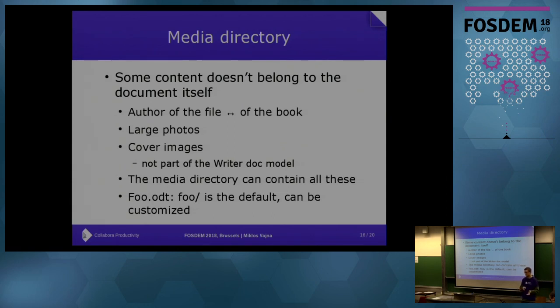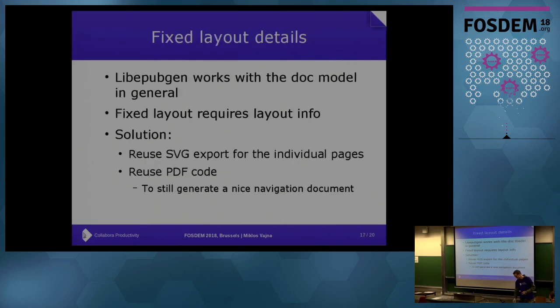This is a long list of features that had to be added to libepubgen, which means that by the time of the 6.0 release a libepubgen release was also made. One concept I want to explain is the media directory — the directory that sits next to the document and contains files which are not part of the Writer document model. It can contain an XMP metadata file from Adobe to automatically override metadata during export, which allows you to convert thousands of documents automatically with custom metadata overrides. It is also useful for large multi-megapixel images where keeping them outside the document model has benefits.